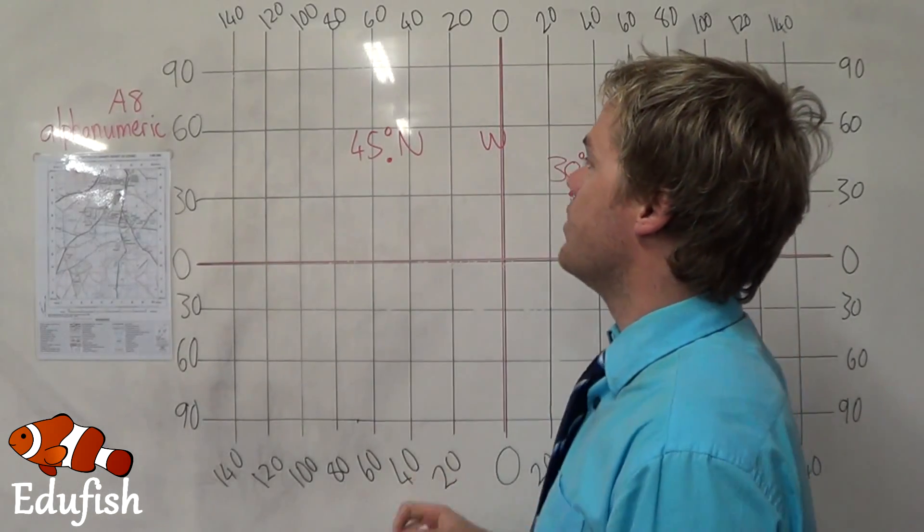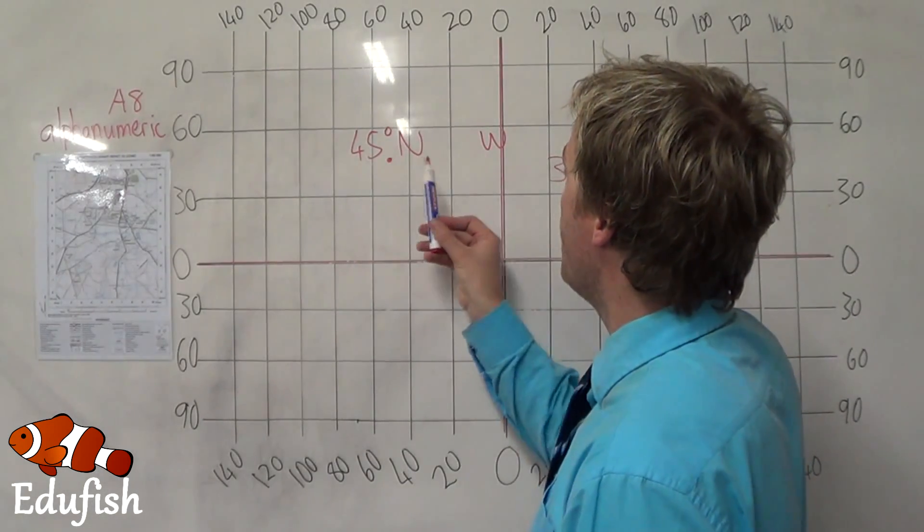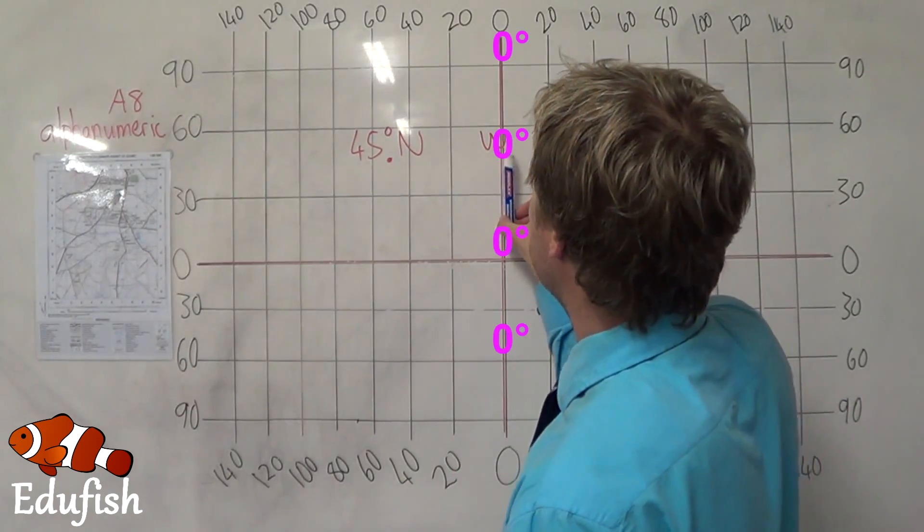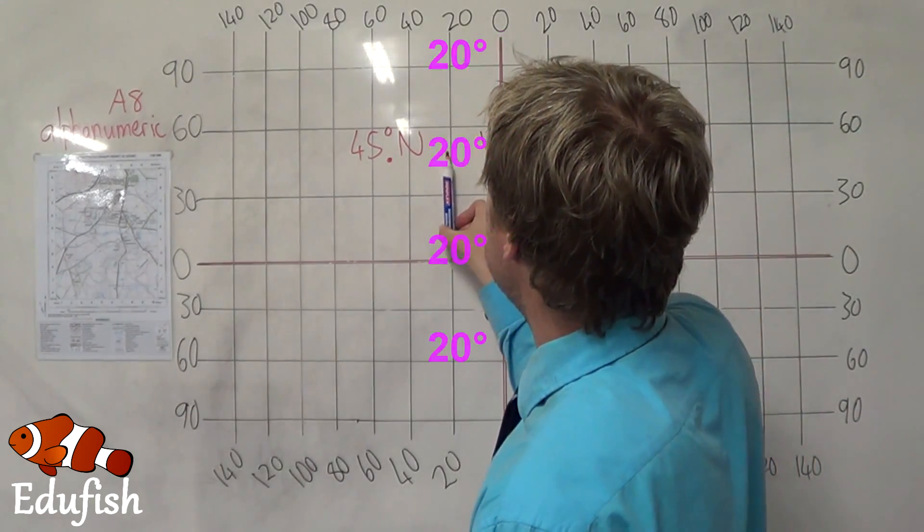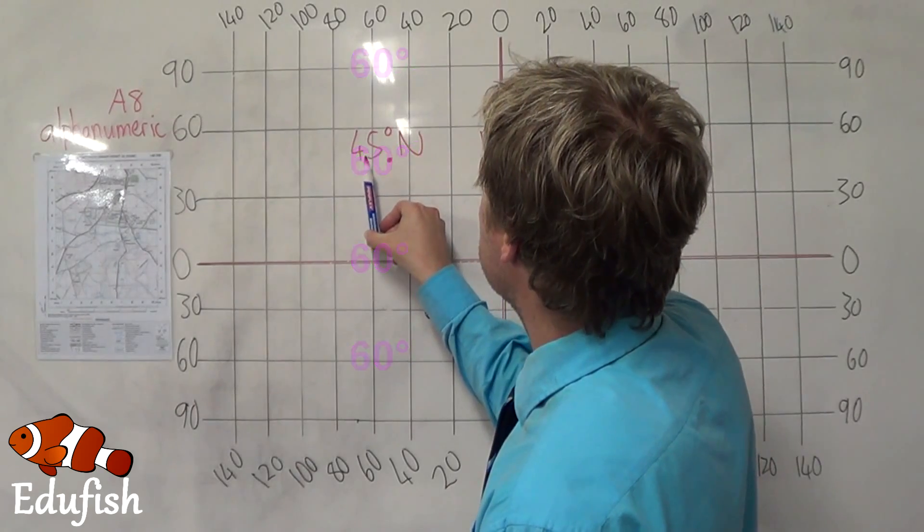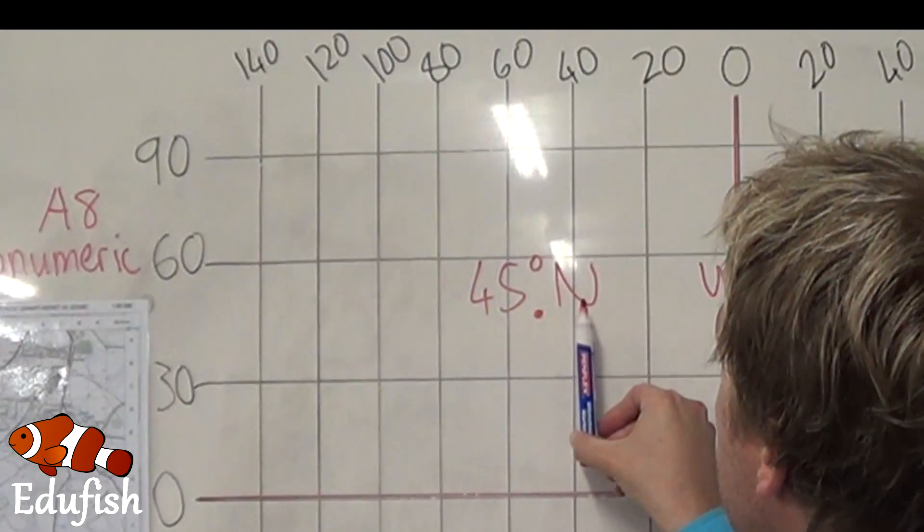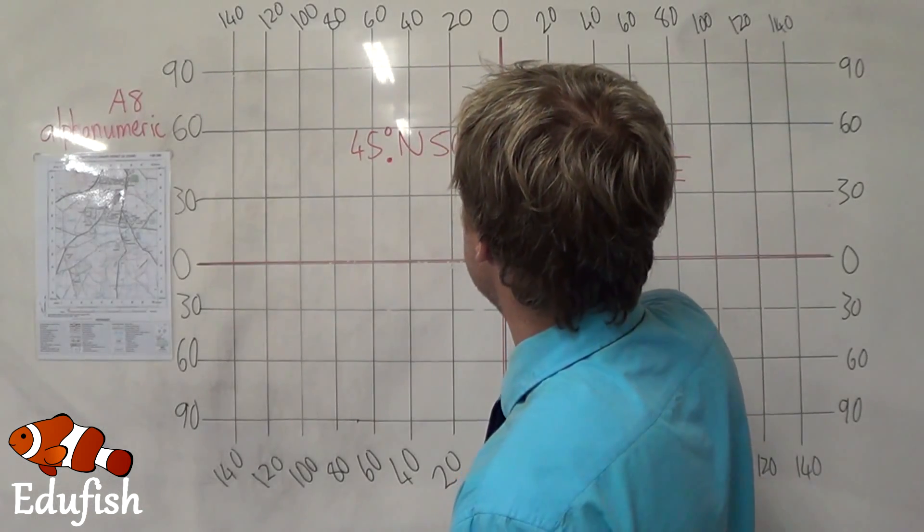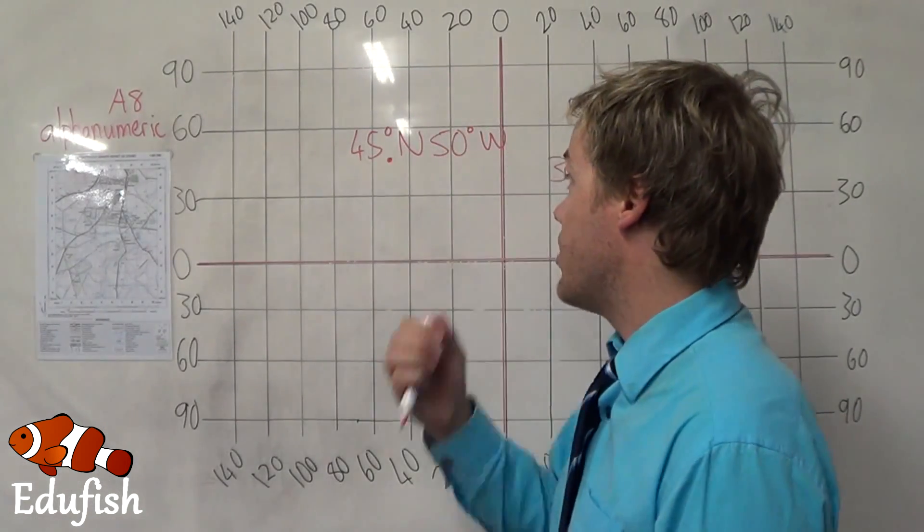All right. Now, we are going to go to this one here. And we want to find out how far west of the Greenwich line. And so, we are going to take it from here. North, 20, 40, 60. And so, it is halfway in between 40 and 60, which would give us 50. 50 degrees west. Perfect.